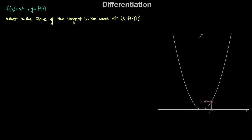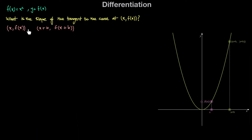Now in order to answer this question, let's take another point on this curve, and let's say that this point has the x coordinate x plus h. Therefore the y coordinate over here would be y equal to f(x+h). So now we have another point on this curve with coordinates (x+h, f(x+h)). So what we have here are two points: the point (x, f(x)), and the point (x+h, f(x+h)).